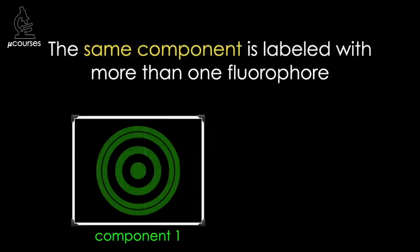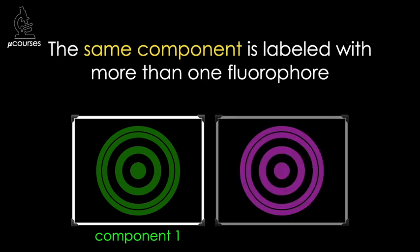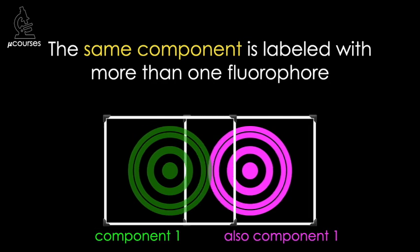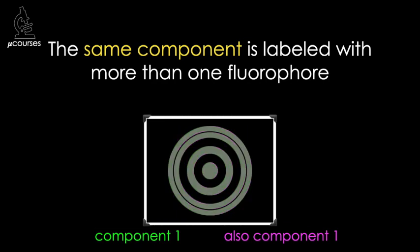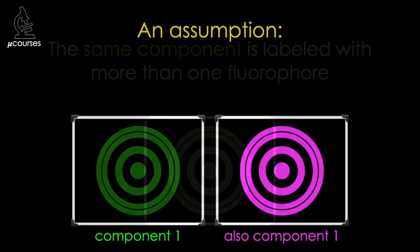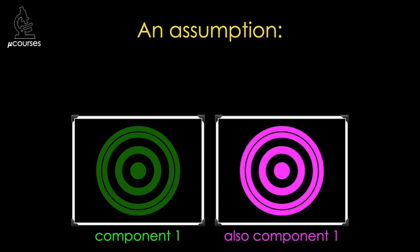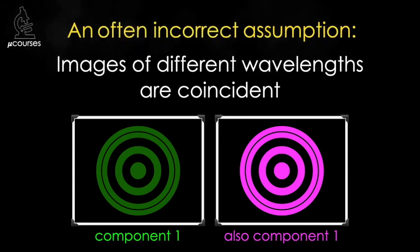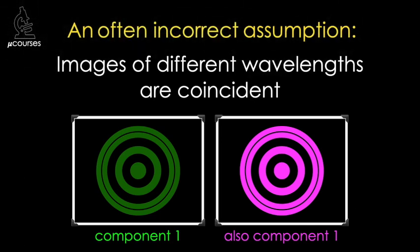It's simplest to think about the effects of chromatic shifts if we consider a specimen in which the same component is labeled with more than one fluorophore, such that it fluoresces both green and magenta. In this case, when we merge the images together, it's obvious to expect that we should get perfect co-localization. But this logic requires the assumption that the images of different wavelengths are perfectly coincident, and this is, unfortunately, most often an incorrect assumption, because most microscopes introduce chromatic shifts into images.